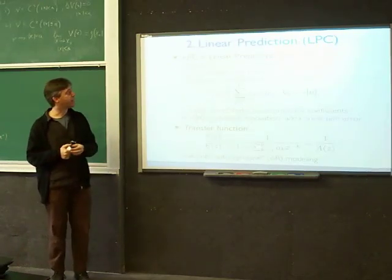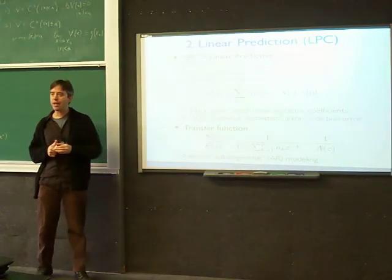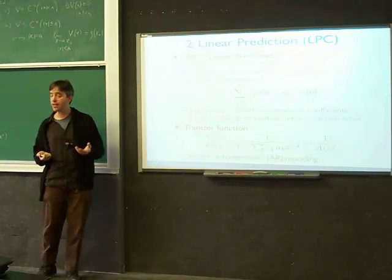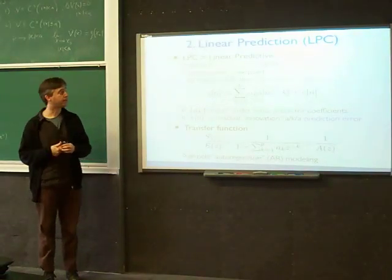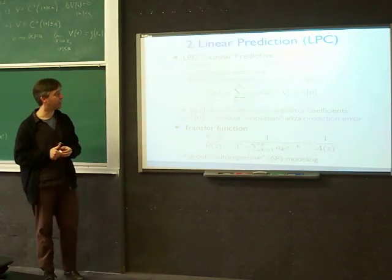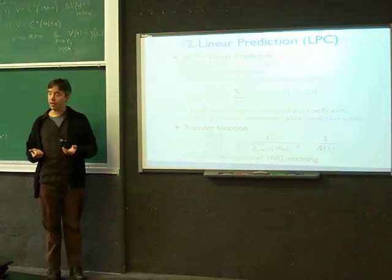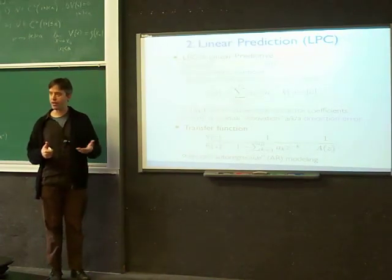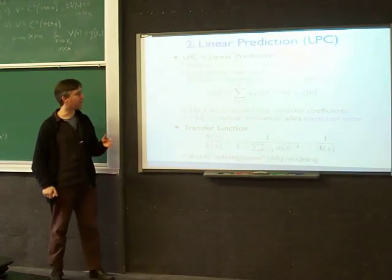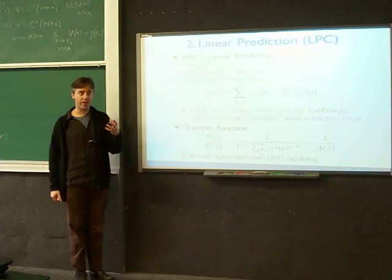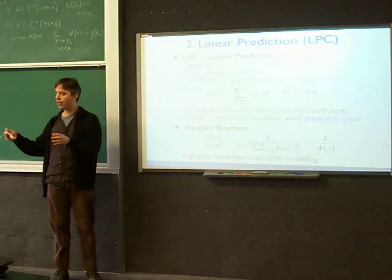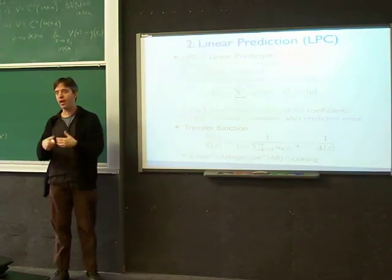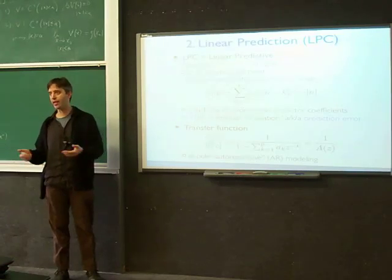Linear prediction is how we're going to do this. It's normally called LPC — linear predictive coding — because early uses were in coding: taking a signal and compressing it for transmission. The goal in coding is to remove redundancy in a signal, expressing it with fewer parameters. The principle is: if there's redundancy in the signal, I can tell something about future samples from past samples. I build a system that tries to do that prediction, then only transmit the differences between what you could predict and what the true signal actually is.